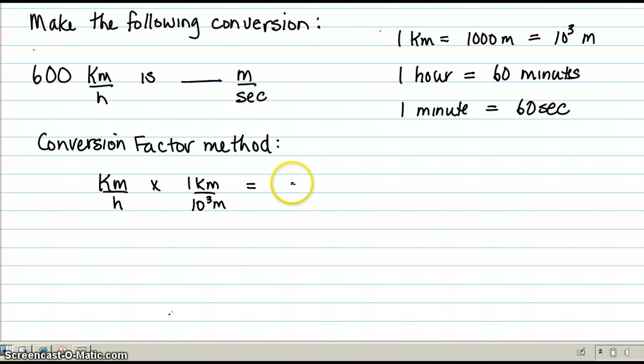Okay, well that would give me units of kilometers squared per hour meter. Not exactly sure what that is. But if I took the kilometers per hour and multiplied by 10 cubed meters per kilometer, my units then would be, the kilometers would cancel, and I would now be in meters per hour